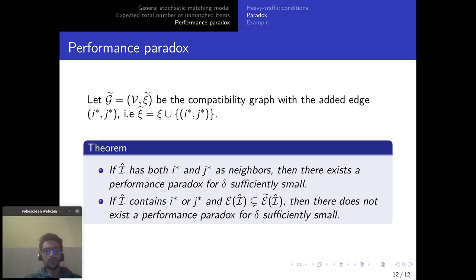And now we are ready to present the main contribution of our paper which is the sufficient conditions for the existence or non-existence of a performance paradox. So if our bottleneck set i hat has both i star and g star as neighbors then there exists a performance paradox for delta sufficiently small. And if i hat contains i star or g star and that they don't have any more neighbors when we are adding an edge to the compatibility graph then there does not exist a performance paradox for delta sufficiently small.